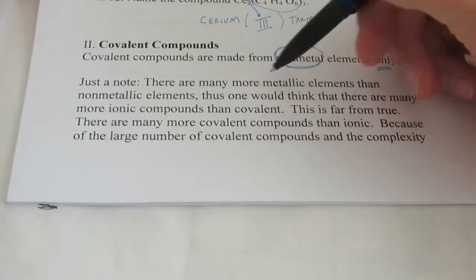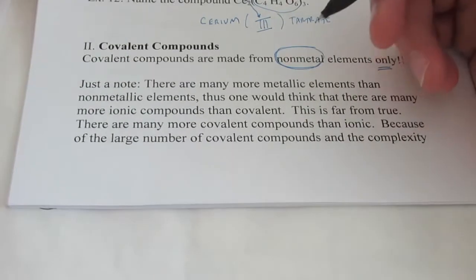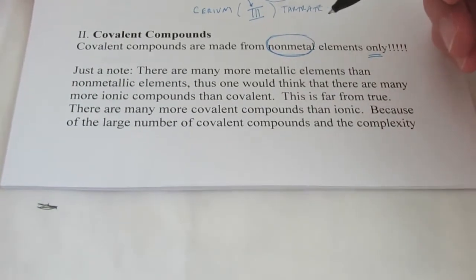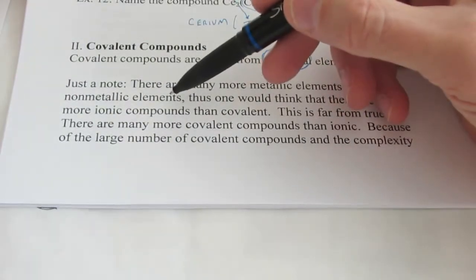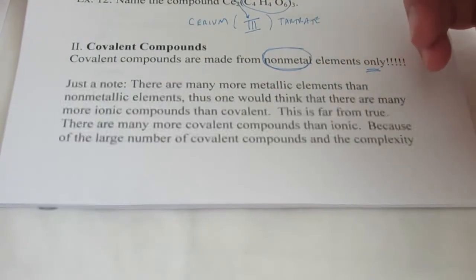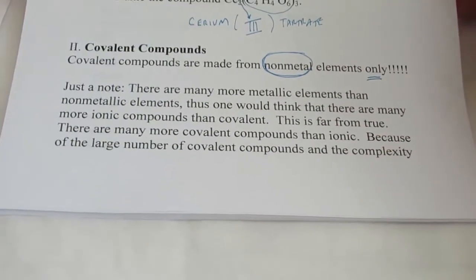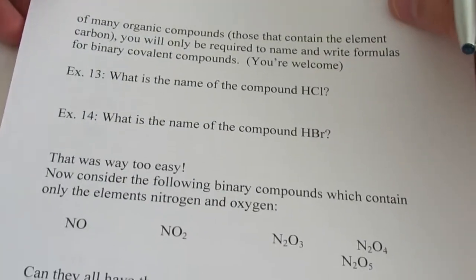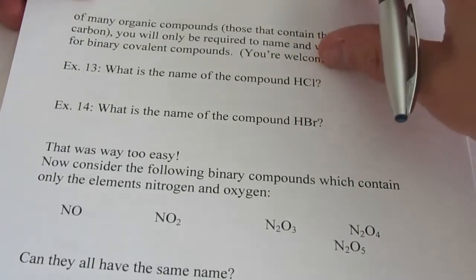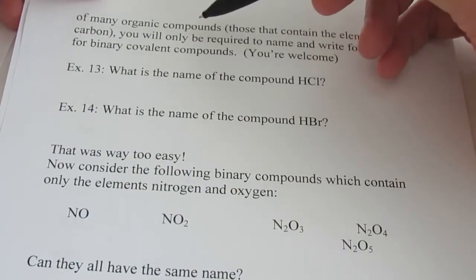Now, there are many more metallic elements than non-metallic elements. You probably just noticed that, or have noticed it before on the periodic table. Thus, one might mistakenly think that there are many more ionic compounds than covalent, but that's far from true. There are many more covalent compounds than ionic. Because of the large number of covalent compounds, and the complexity of something called organic compounds, which we'll get into at the very end of the year.